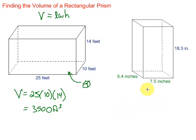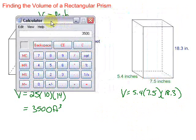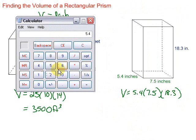Let's try this other one. Again, we just multiply the three dimensions—the depth or the width, the length, and the height. So on this one, we have V equals 5.4 times 7.5 times 18.3. We're going to go ahead and multiply those numbers: 5.4 times 7.5 times 18.3, which gives us a volume of 741.15.